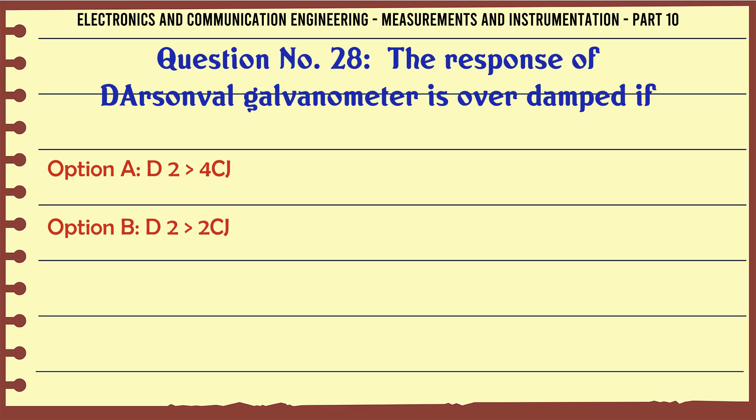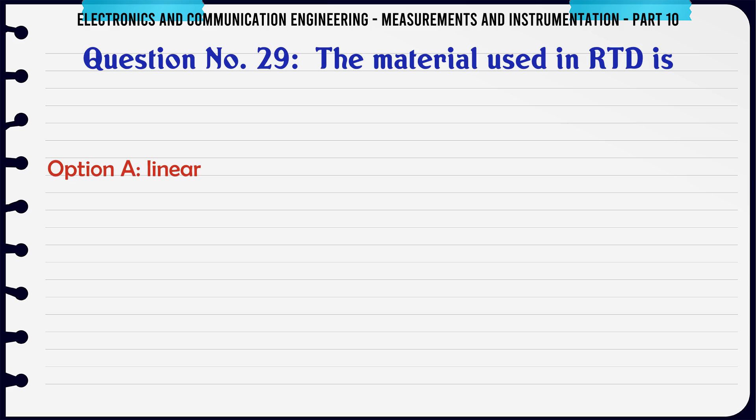The response of D'Arsonval galvanometer is over-damped if: A) D²≥4CJ, B) D²≤2CJ, C) D²<4CJ, D) D²>2CJ. The correct answer is D²≥4CJ.